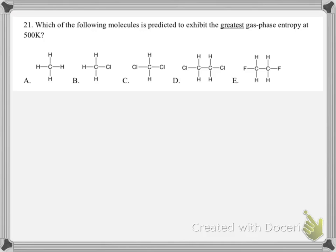For number 21, they want us to pick which molecule has the greatest gas phase entropy at 500 Kelvin. When trying to decide between different molecules and their standard entropies, we usually look at phase and temperature first — but here they tell us they're all gases at the same temperature. So now we have to look at their structures, and the first thing we want to look at is the number of bonded atoms.